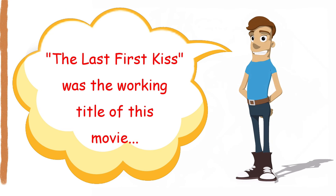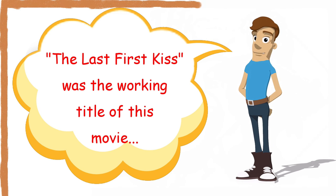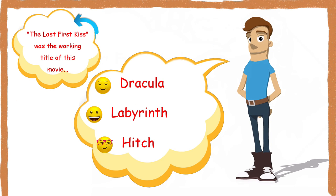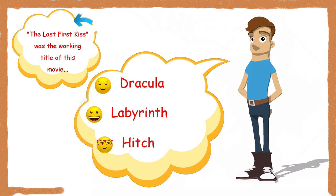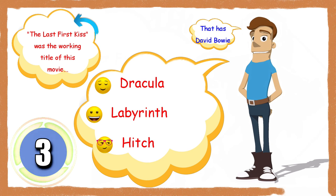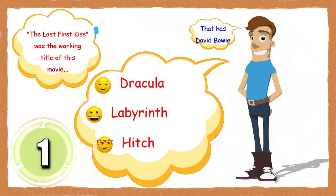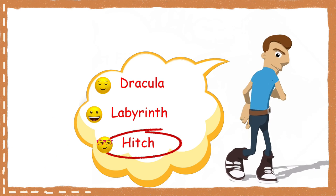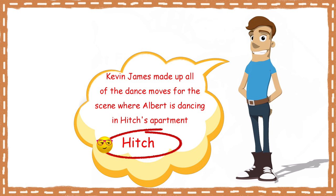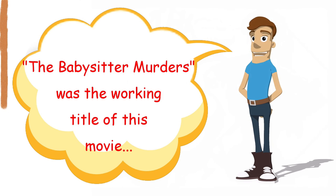The Last First Kiss was the working title of this movie. Dracula, Labyrinth, or Hitch? It was Hitch. Kevin James made up all of the dance moves for the scene where Albert is dancing in Hitch's apartment.